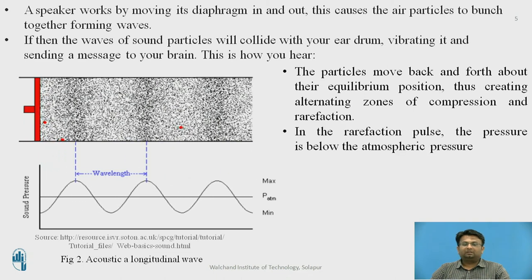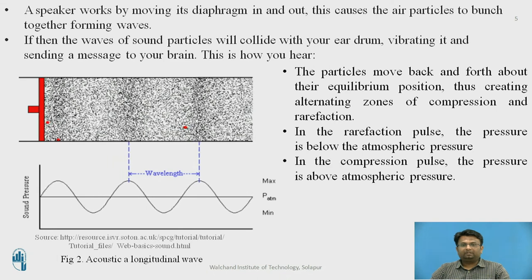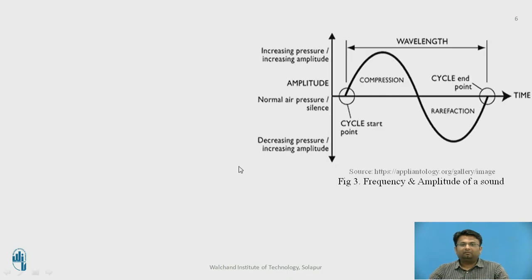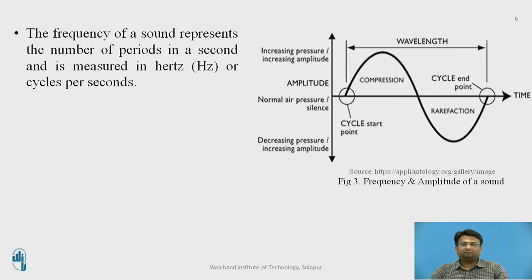In the rarefaction pulse, the pressure is below the atmospheric pressure. In the case of the compression pulse, the pressure is above the atmospheric pressure. The figure indicates one complete wavelength, which is created because of one compression and one rarefaction pulse. As the pressure increases, the amplitude of the waveform increases, which is called a compression pulse. As the wave pressure decreases, which is called rarefaction, the amplitude starts decreasing. At normal air pressure, there is silence.